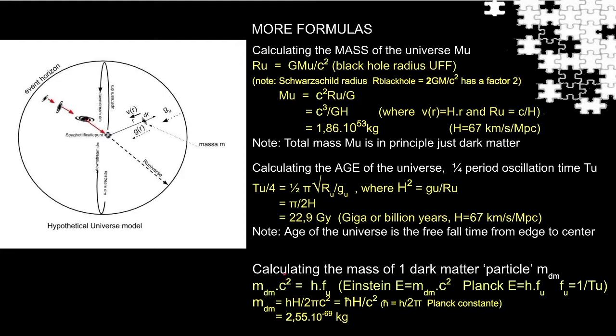Curious enough, if dark matter particle is also considered as an electromagnetic wave, then the mass of a dark matter particle, MDM, can be calculated as well. The kinetic energy of each dark matter particle, Einstein's famous formula E is m c squared, is equal to Planck-Einstein's formula, h times fU, where h is Planck's constant, and fU the lowest oscillating frequency of the universe.